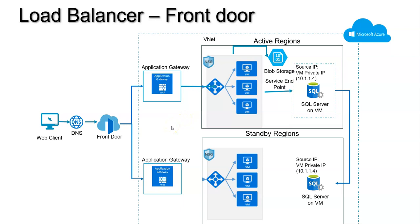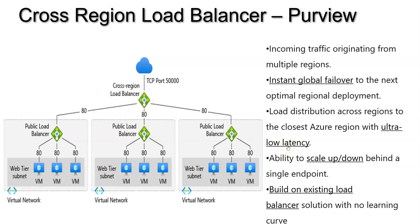So what is the need for the cross-region load balancer? The existing load balancer is scoped to a particular region. Now assume you have multiple regions with VMs and load balancers configured within each region. You need one load balancer globally across those regions. The current options like Front Door, Application Gateway, or Traffic Manager don't help in that mode. If you want global load balancing at the TCP/IP layer 4 level, this new option — the cross-regional load balancer — provides TCP/IP level load balancing across regions.